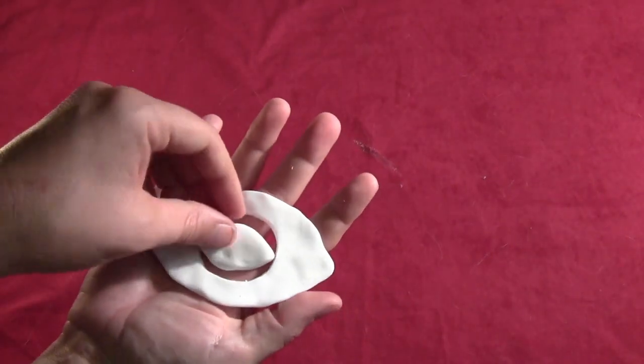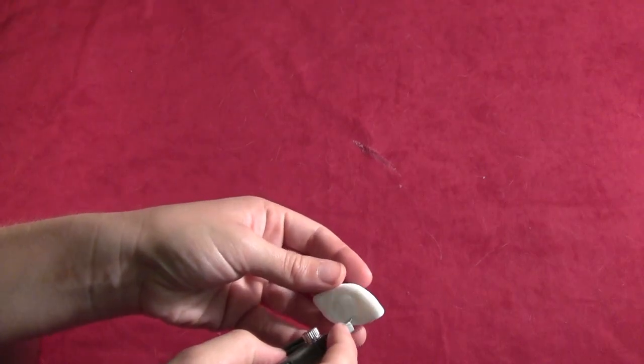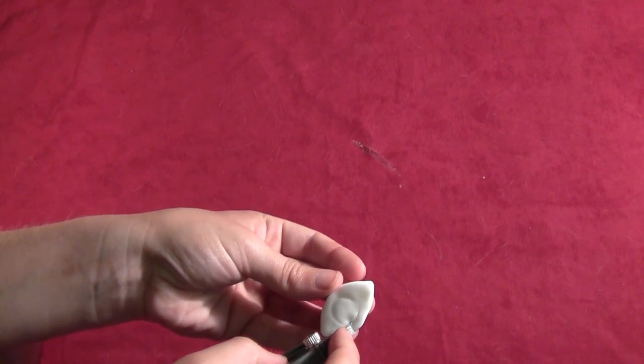And so then take some more clay and form a smaller eye shape that will fit right inside that hole. And then do the same thing, cutting out a circular shape from the center of the eye.